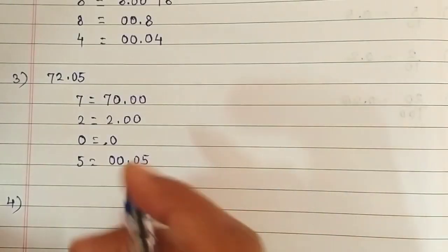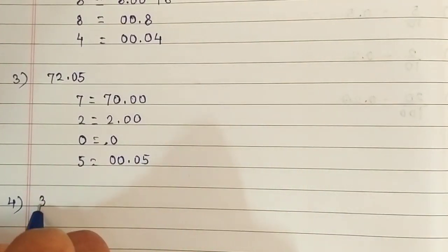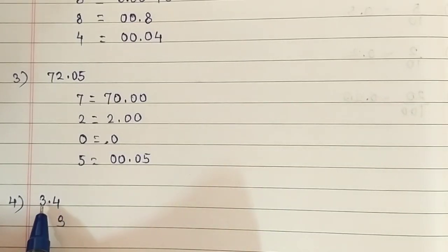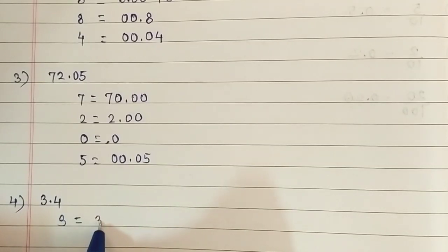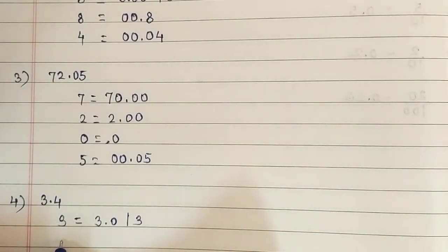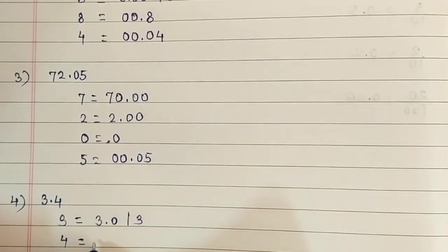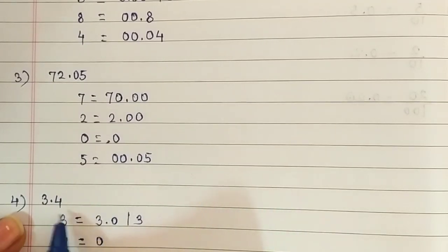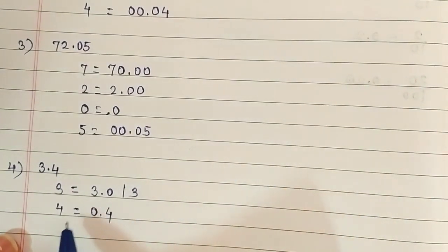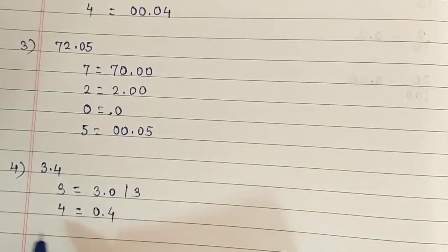Now the fourth question is 3.4. Let's write the place value of 3 here. 3 is in the unit place because it is before the decimal point, so the place value of 3 is 3.0, or we can write it as 3. Then let's write the place value of 4. 4 is after the decimal point, so write 0 for 3, give a decimal point, and write 4. The place value of 4 is 0.4.